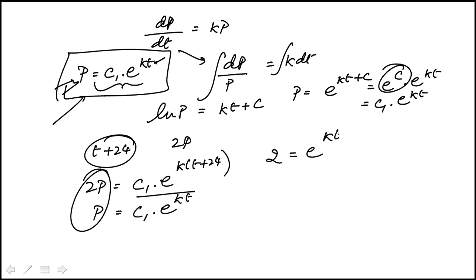And then its numerator is e to the kt plus 24k. And then since I'm subtracting the exponents, the kt term drops out. So I end up with 2 is e to the 24k. That means ln 2 is 24k and k is natural log of 2 over 24.